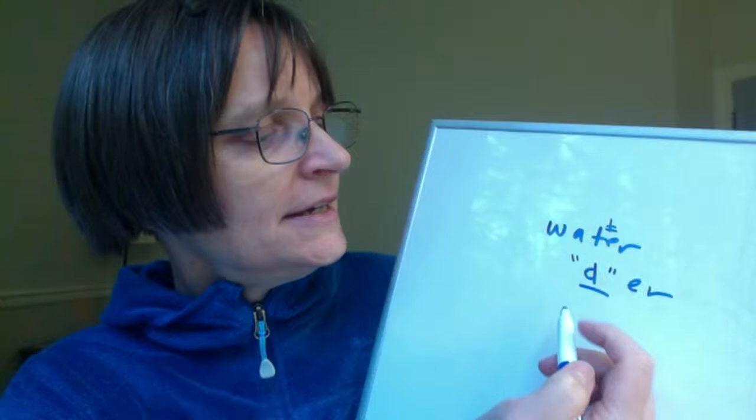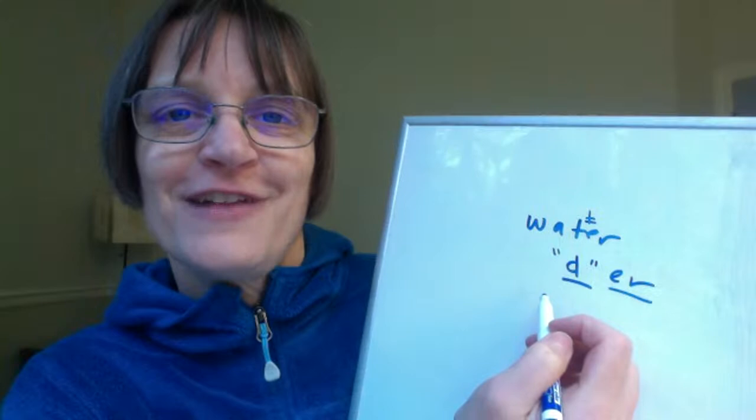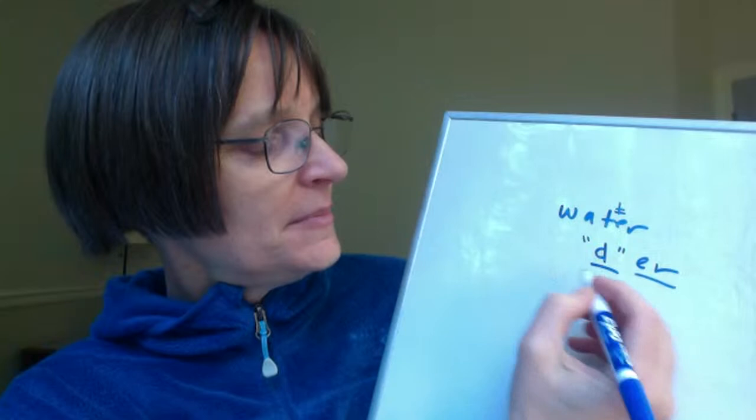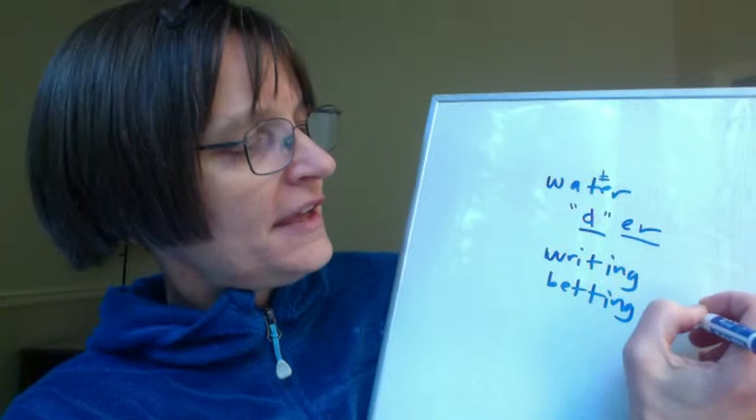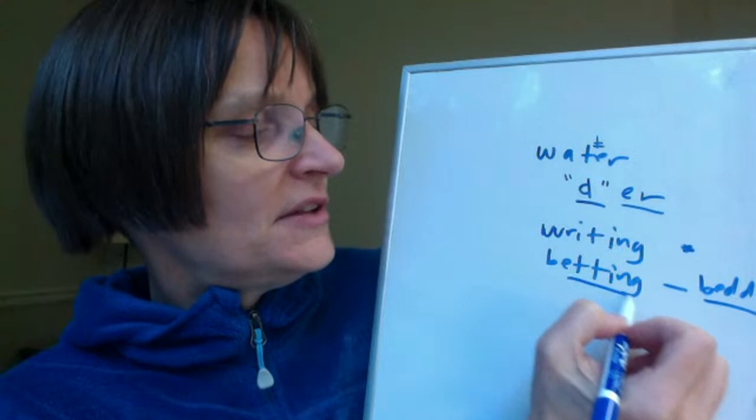It might be also that the flap T is more difficult when followed by an ER. So you might want to try it first with something like the word 'writing' or 'bedding.' If you think about the word 'bedding' — we pronounce 'betting' and 'bedding' almost exactly the same; the only difference is one might have a slightly longer vowel: 'bedding,' 'bedding.'